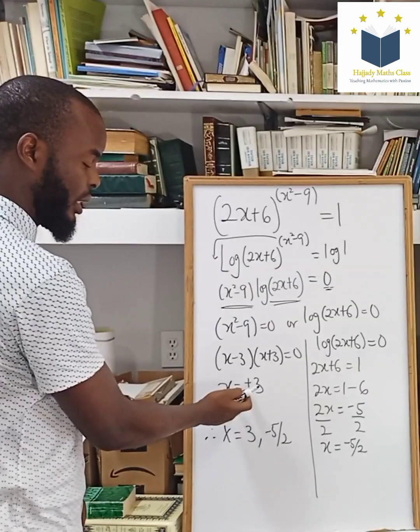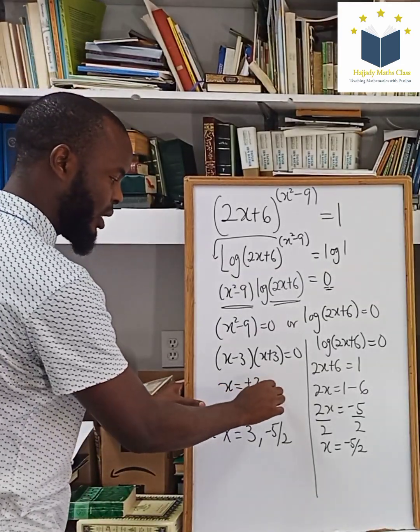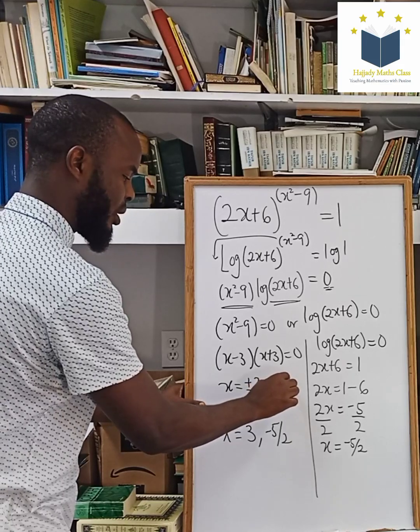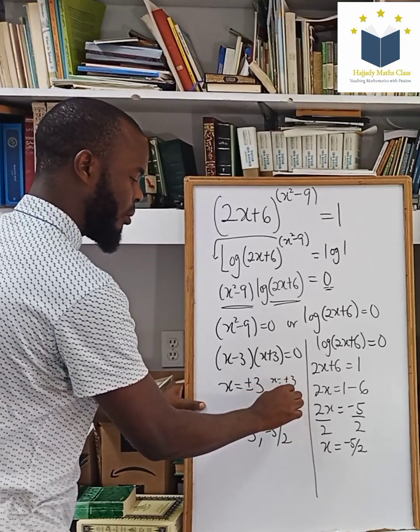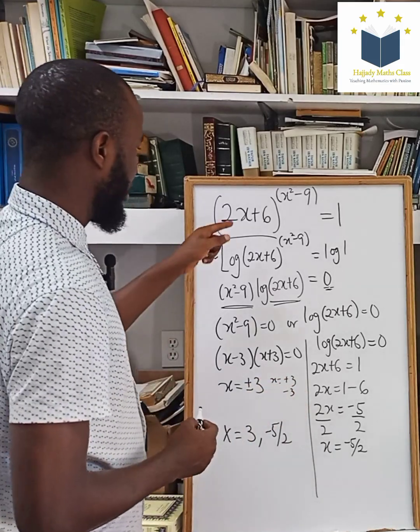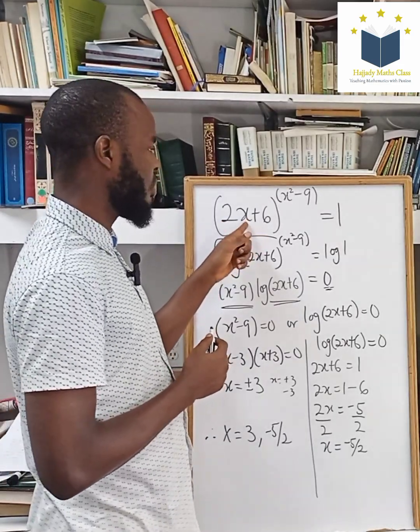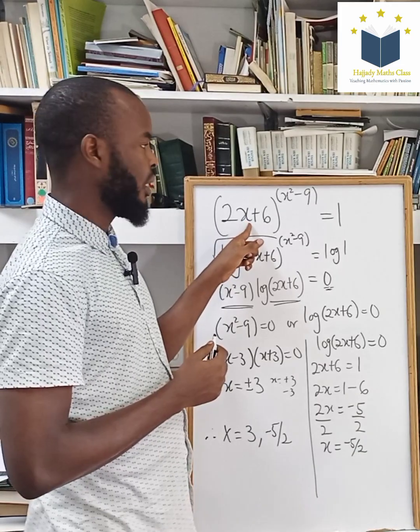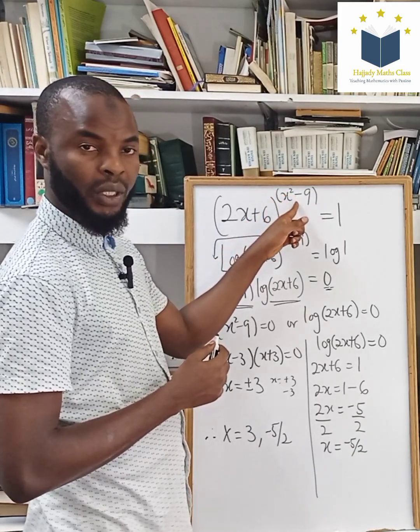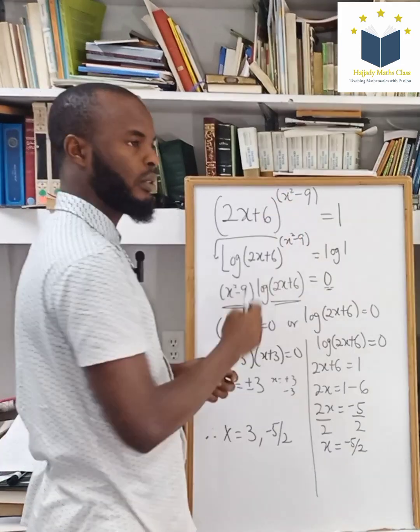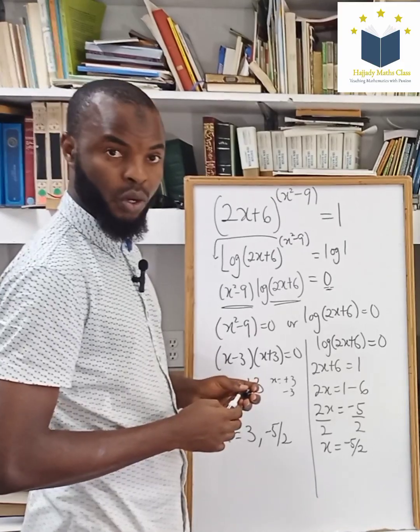What about negative 3? Because here, this means my x is either plus 3 or minus 3. If you plug in negative 3 into this equation, this is going to be 0. And this is going to be 0. So 0 to the power of 0 cannot be the same thing as 1.